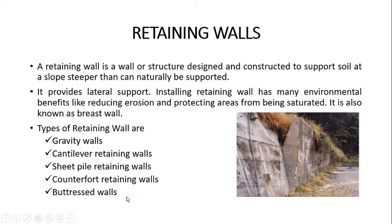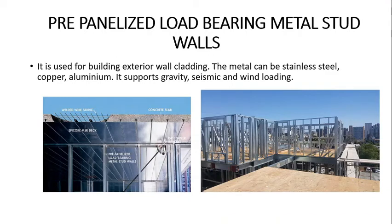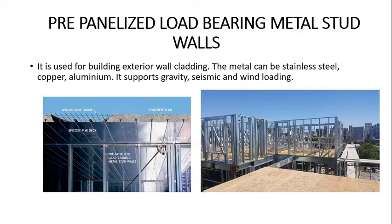Next is pre-panelized load bearing metal stud walls. As seen in the pictures, this wall is composed of a metal frame and is mostly used as a building exterior wall cladding. The frame can be made up of any metal like stainless steel, copper, or aluminium. One of the biggest advantages of this kind of frame is that it supports gravity, seismic, and wind loading. These walls are also manufactured in a factory. Specifications are given to manufacturers who ensure all metal sections are of good quality and precise to specification; otherwise, the prefabricated wall panels will not fit on site.